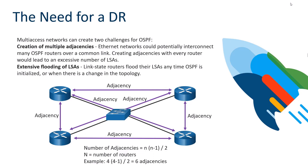After all those LSRs and LSUs, you've reached full convergence. So let's take a step back. When we have this DR and BDR relationship coming into play in the two-way state, why is it there? Why is it important?